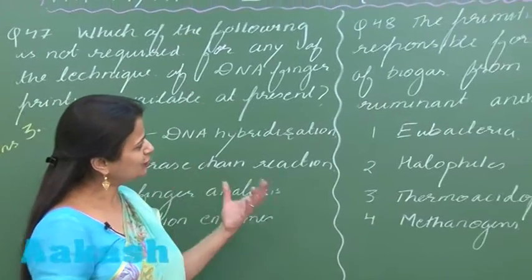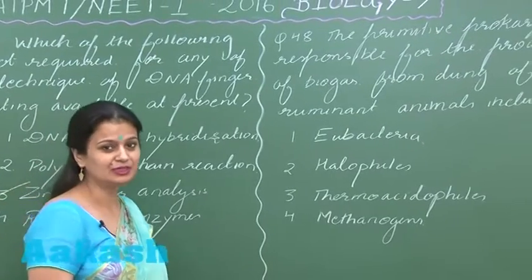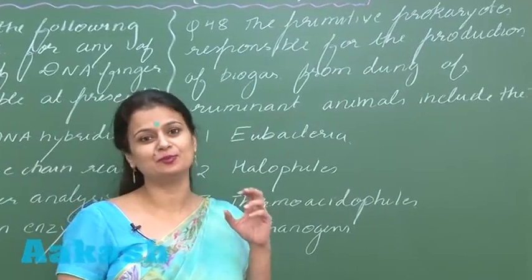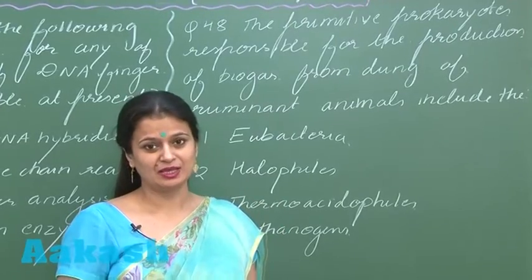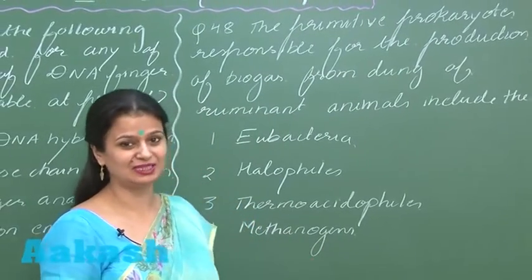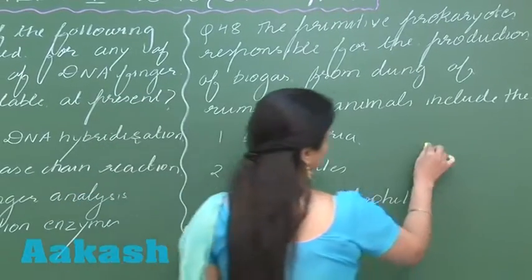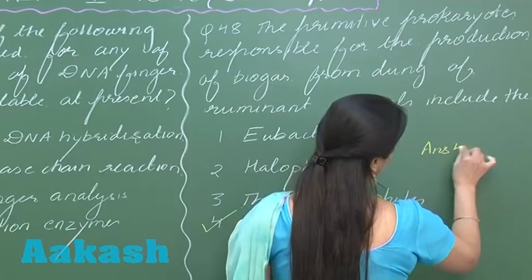Now coming to question number 48, again a very simple question: which group of bacteria is responsible for biogas production? It's the Archibacteria, and you know the name very well, that is methanogens. So the right answer for this question is option number 4.